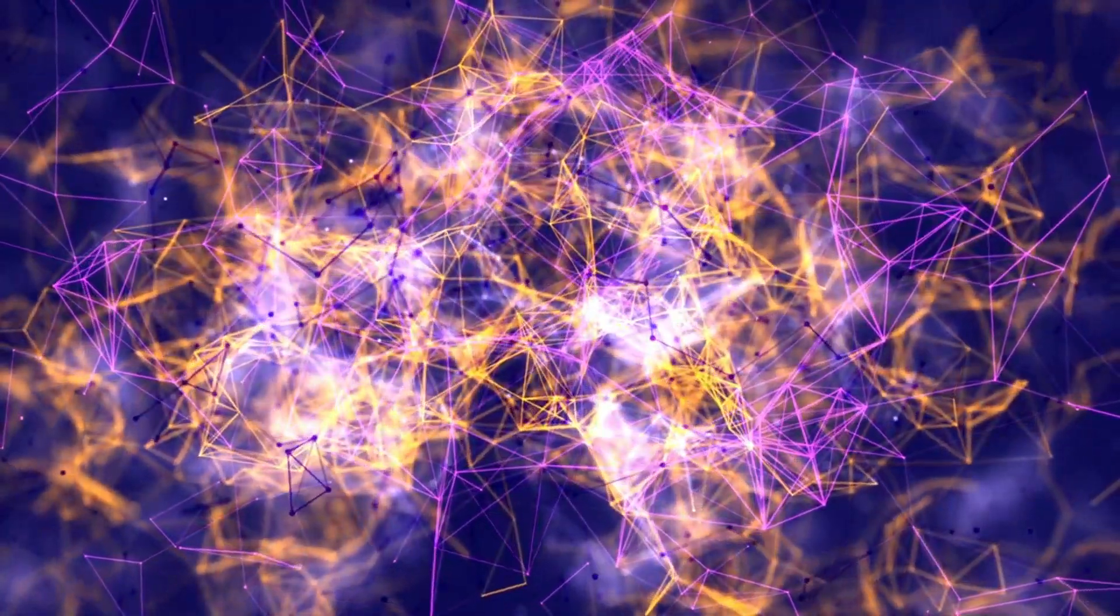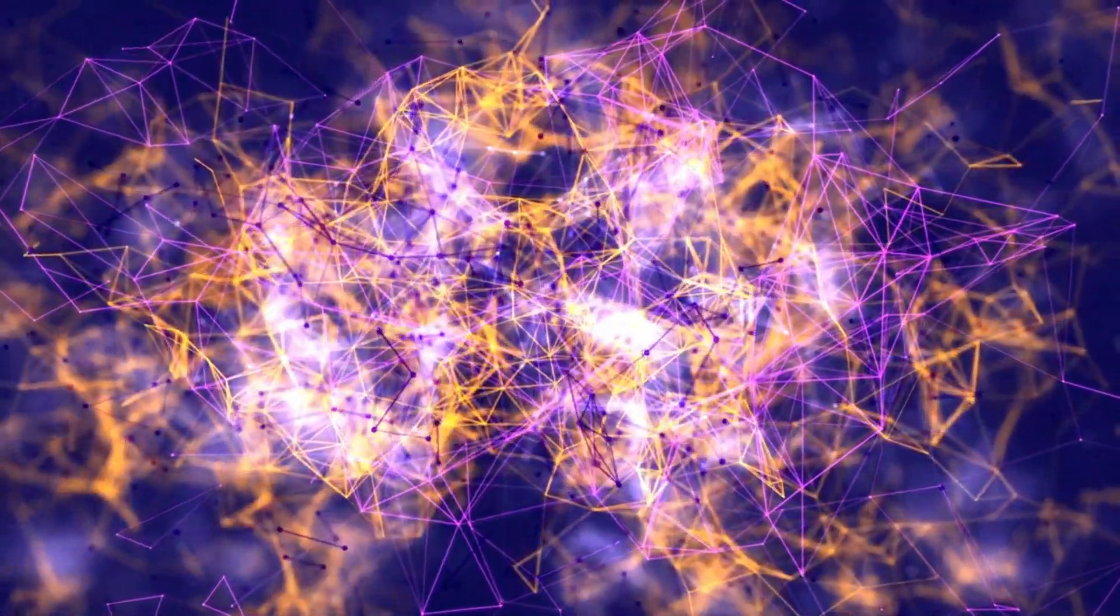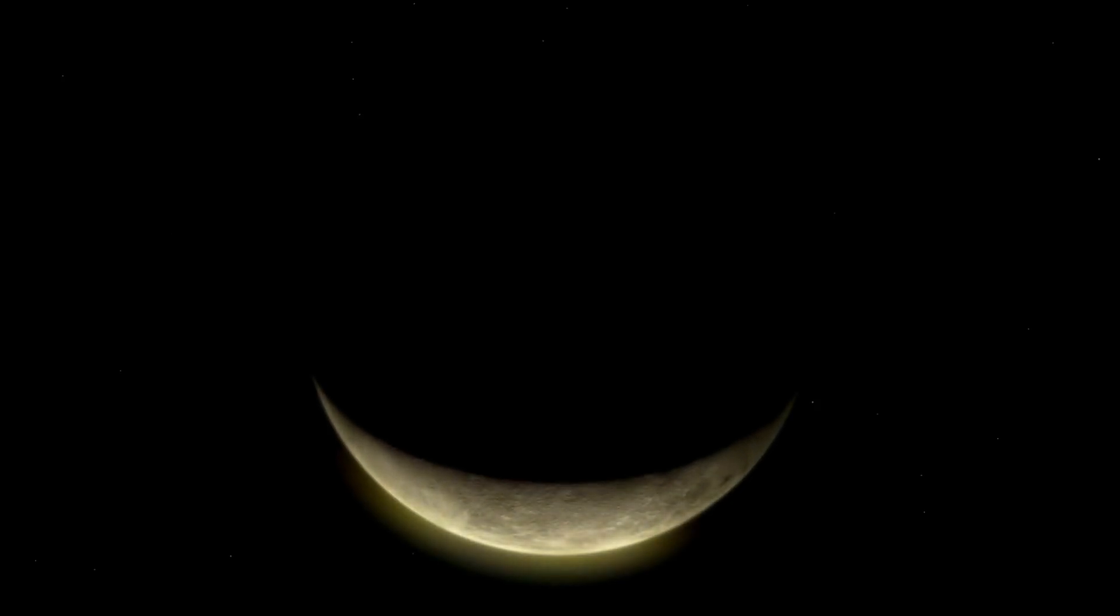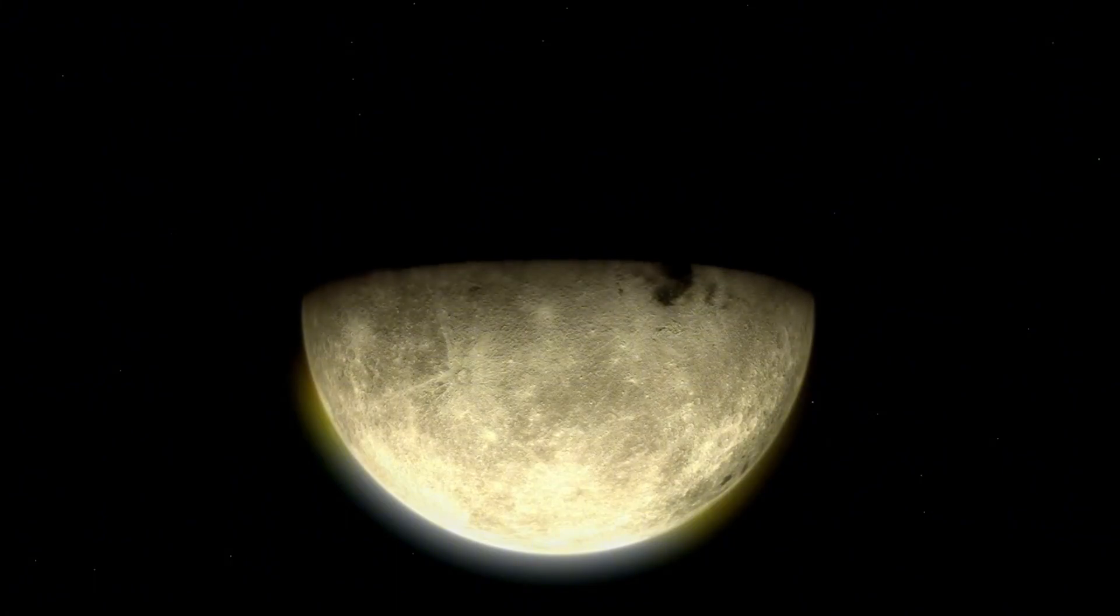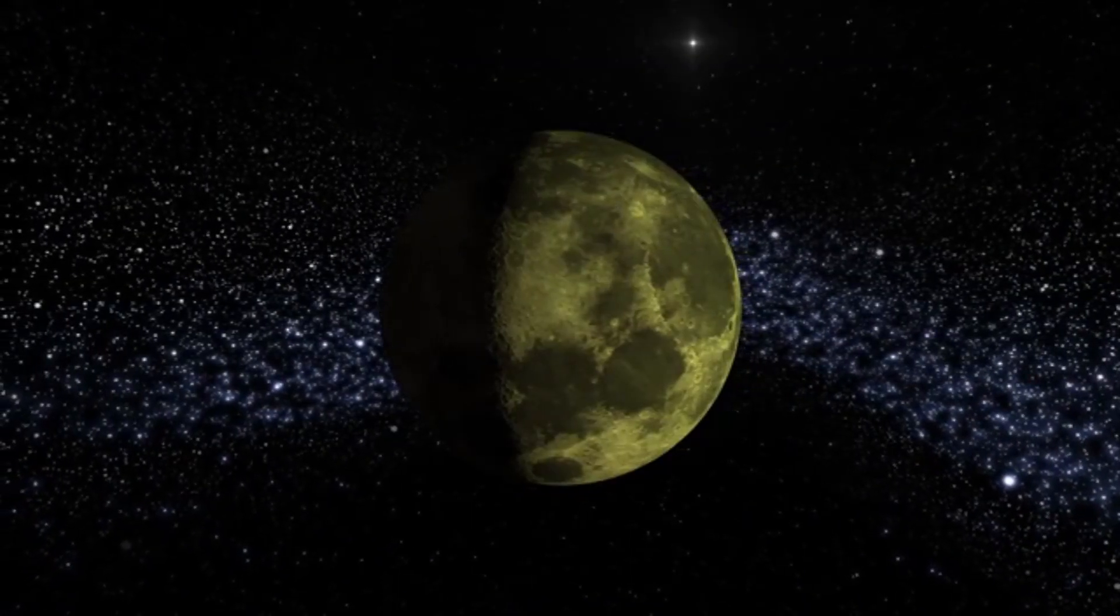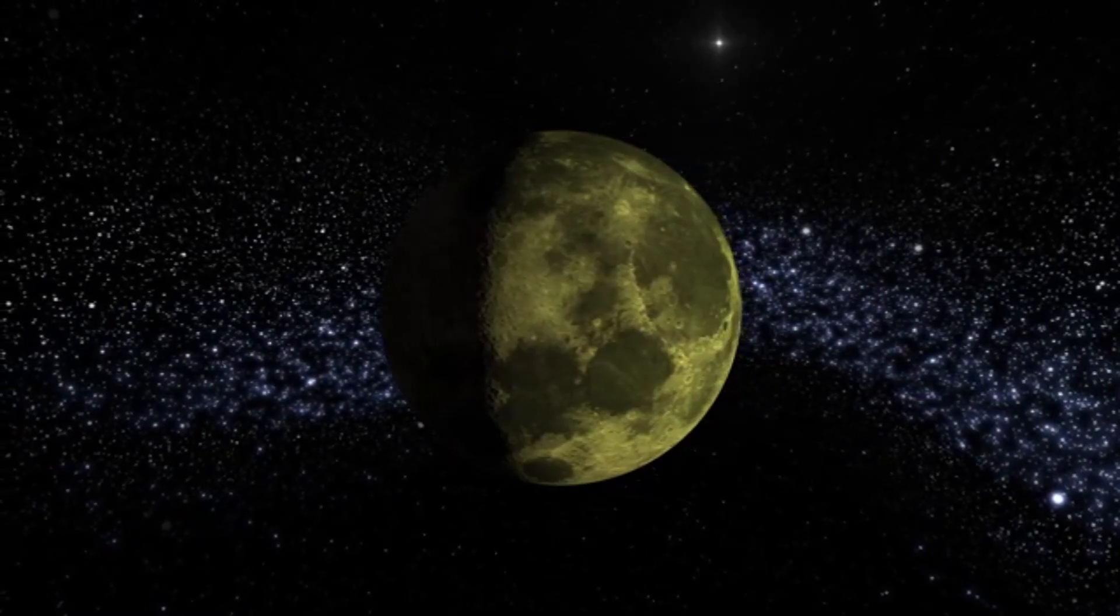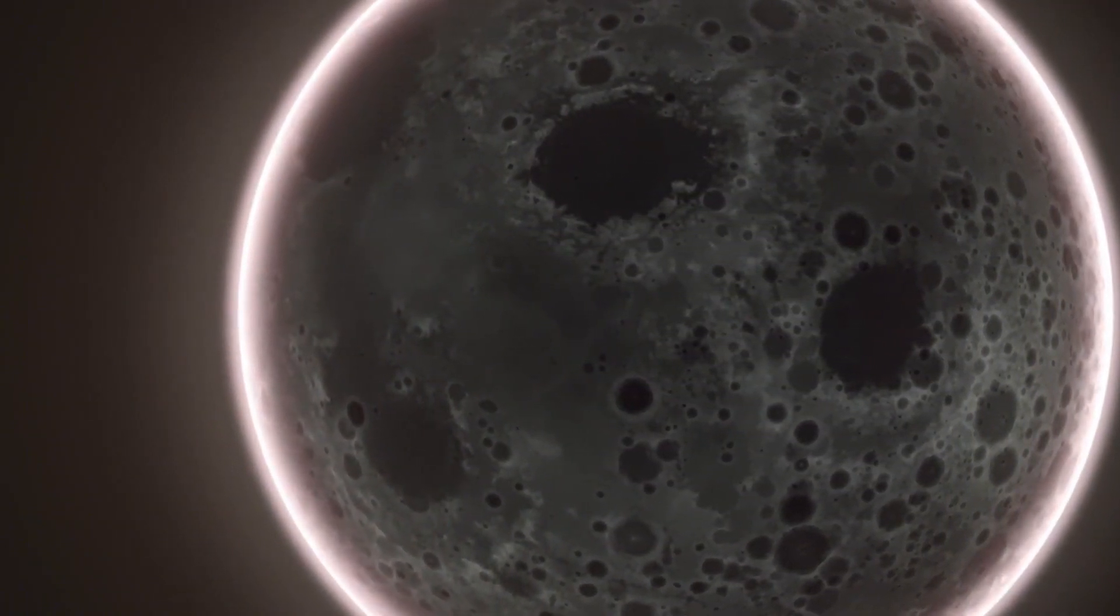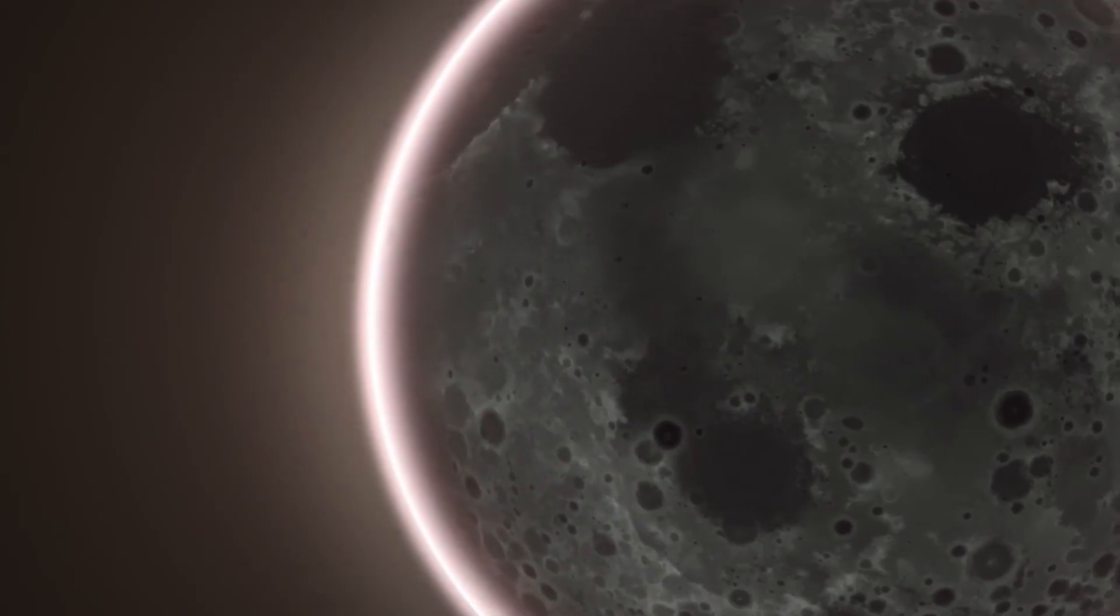There are countless exoplanets waiting to be discovered in our universe. These planets come in all shapes and sizes, with some being enormous gas giants while others resemble our own Earth. One type of exoplanet that has caught the attention of space specialists is the gas giant. These planets are similar in structure to Jupiter and Saturn but are much larger. Some of these behemoths have been named super-Jupiters.